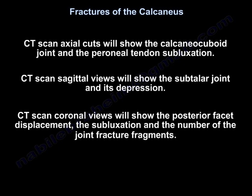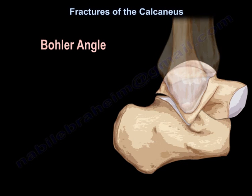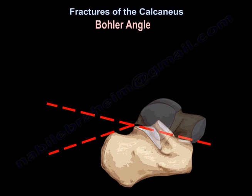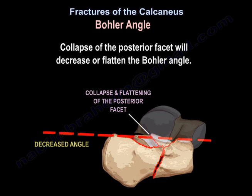CT scan axial cuts will show the calcaneocuboid joint and the peroneal tendon subluxation. CT scan sagittal views will show the subtalar joint and its depression. CT scan coronal views will show the posterior facet displacement, subluxation, and the number of joint fracture fragments. The Böhler angle is important — the normal Böhler angle is between 20 to 40 degrees and is measured on a lateral X-ray. Collapse of the posterior facet will decrease or flatten the Böhler angle.